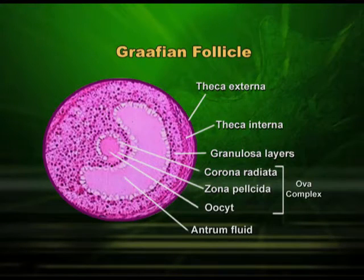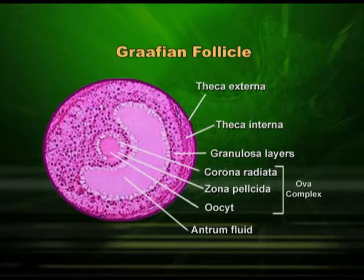This is the detailed structure of the Graafian follicle. You can see the ovum eccentrically placed, the zona pellucida surrounded by corona radiata, the cumulus oophorus providing a bed for the ovum, and all three layers — theca externa, theca interna, and granulosa — with a well-defined antrum filled with antral fluid. This is the Graafian follicle ready to ovulate. You can see ovulation here: it comes towards the periphery of the ovary and the ovum is thrown out, which is the result of a very delicate and complex hormonal mechanism.